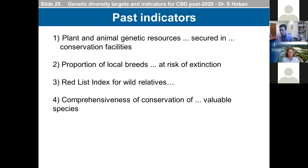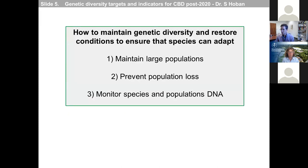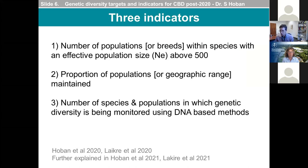To derive reliable indicators for genetic diversity, we should ask: how do we maintain genetic diversity and the ability for species to adapt? There are at least three things to ensure: maintain sufficiently large populations to prevent loss of genetic diversity; prevent loss of populations and their local genetic adaptations; and monitor genetic diversity directly to inform management actions. These three important elements of conserving genetic diversity are reflected in the three proposed indicators, which I will now explain in detail.